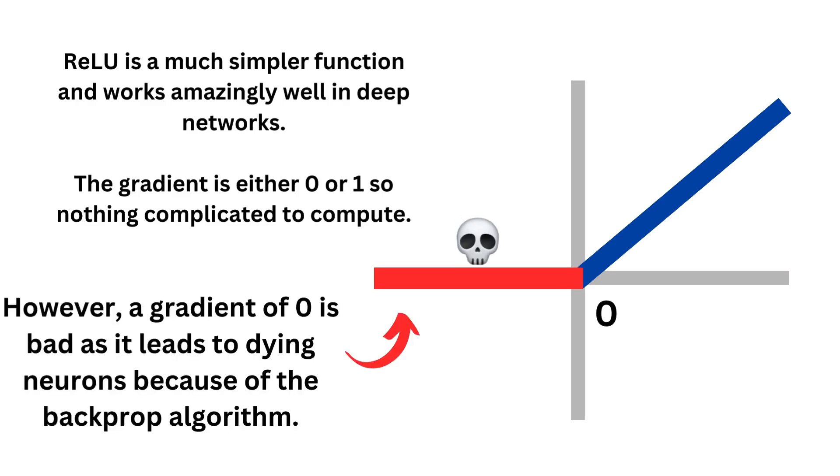However, a gradient of 0 is bad as it leads to dying neurons because of how the backpropagation algorithm works. If you multiply stuff by 0, it will just not do anything.